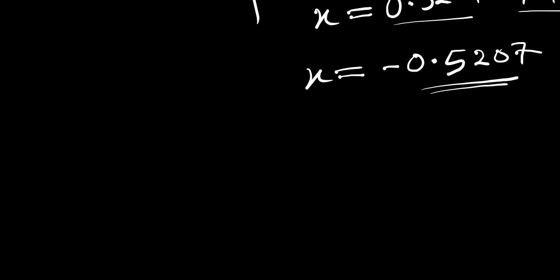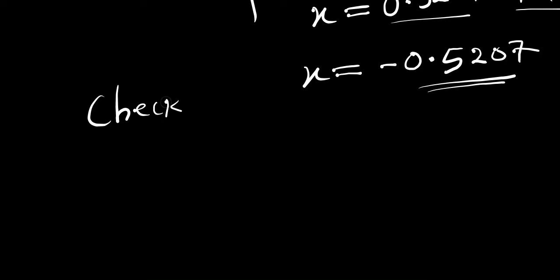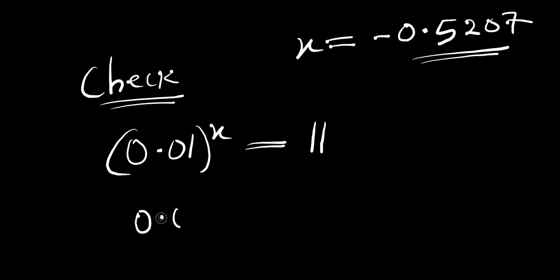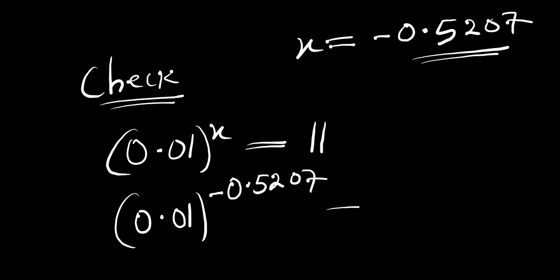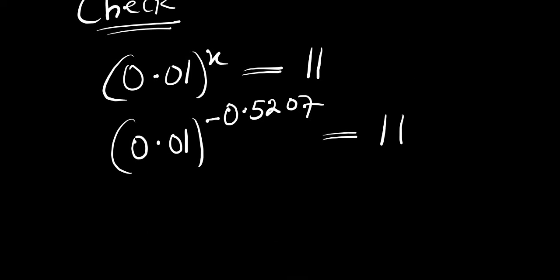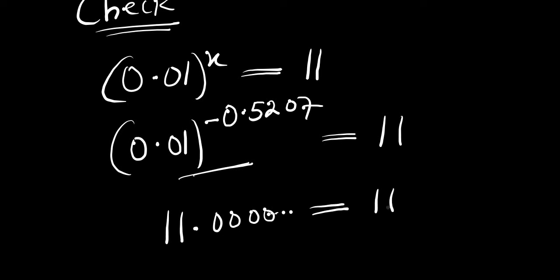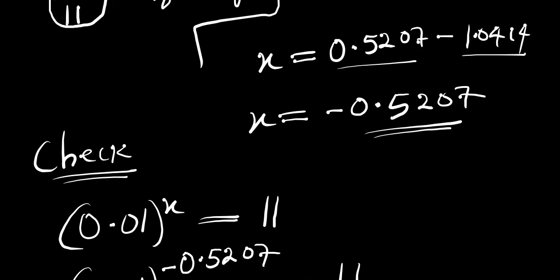So this is the value of x. Now the next thing we are going to do is to check if this value actually satisfies the equation. Recall the problem: we had 0.01 to the power of x equals 11. That means inserting our value for x, we simply have 0.01 to the power of negative 0.5207, and this should give us 11. Using a calculator, we get 11.0000 and other digits, so we can approximate this to be 11, and this equals 11. This shows that the answer we got, which is negative 0.5207, is actually correct.